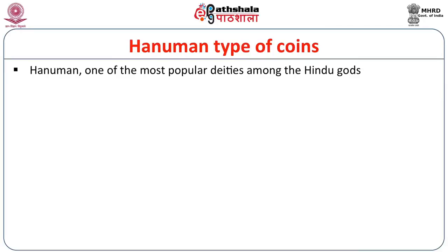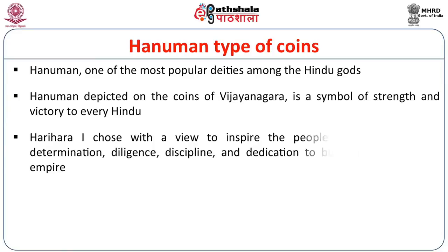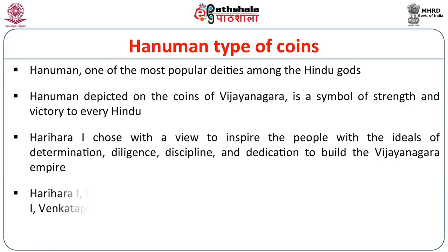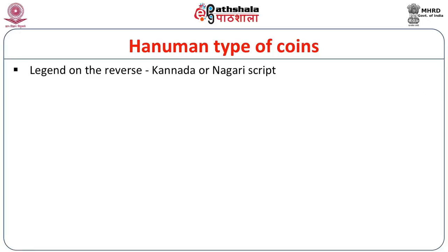The Hanuman type of coins: the first important deity seen on Vijayanagara coins was Hanuman. Hanuman is one of the most popular deities among the Hindu gods, symbolizing strength and victory. Harihara I chose this deity to inspire people with ideals of determination, diligence, discipline, and dedication in building the Vijayanagara Empire. Harihara I, Bukkaraya I, Harihara II, Devaraya I, Srirangaraya I, Venkatipathiraya I, Venkatipathiraya II, and Venkatipathiraya III all issued Hanuman on the obverse of their coins. These coins were minted in gold, silver, and copper, with legends on the reverse in Kannada and Nandhinagari script.